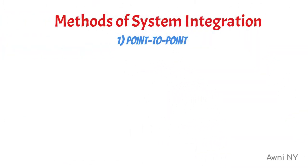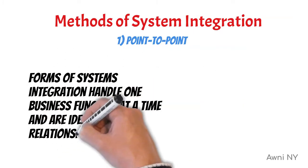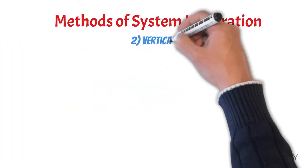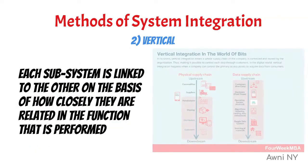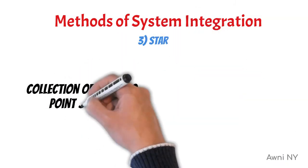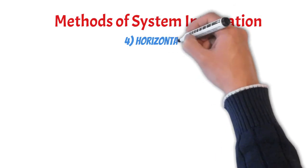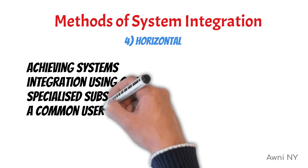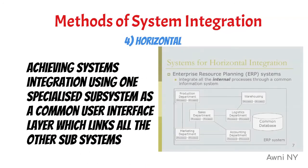Methods of system integration: One, Point-to-Point — handles one business function at a time and is ideal for a one-to-one relationship. Two, Vertical — each subsystem is linked to the other on the basis of how closely they are related in the function performed. Three, Star — a collection of point-to-point system integrations. Four, Horizontal — achieving systems integration using one specialized subsystem as a common user interface layer which links all the other subsystems.